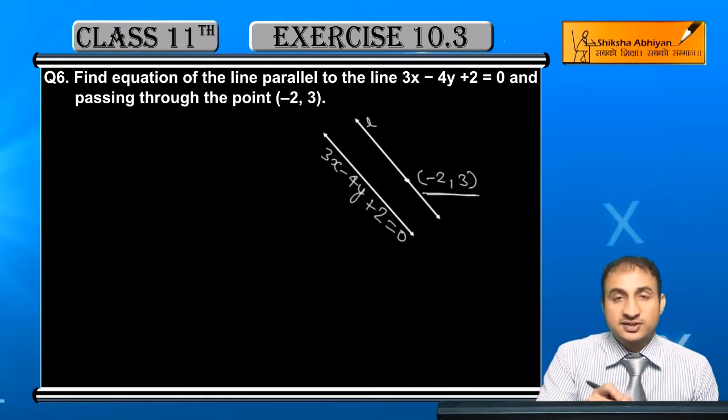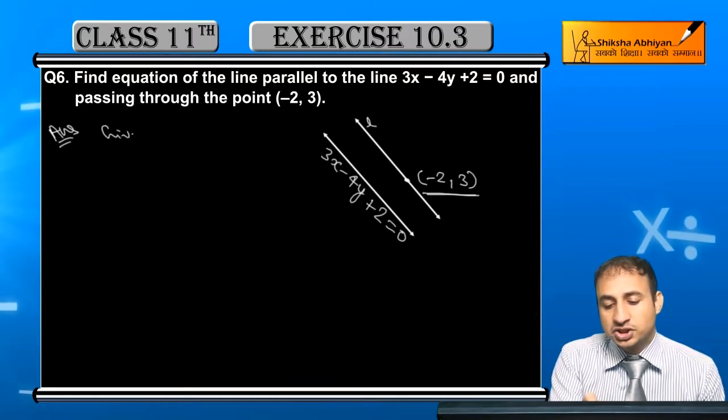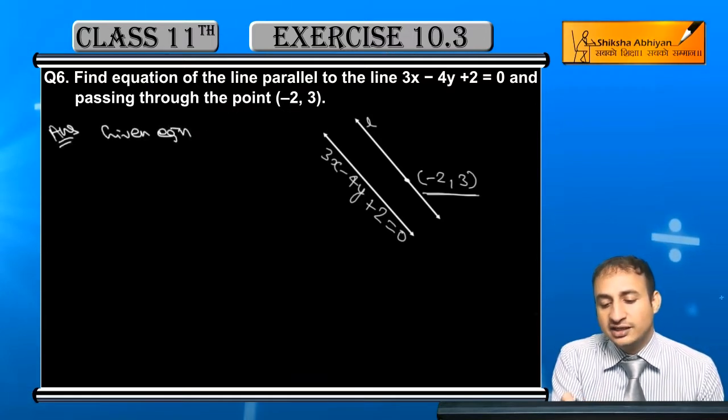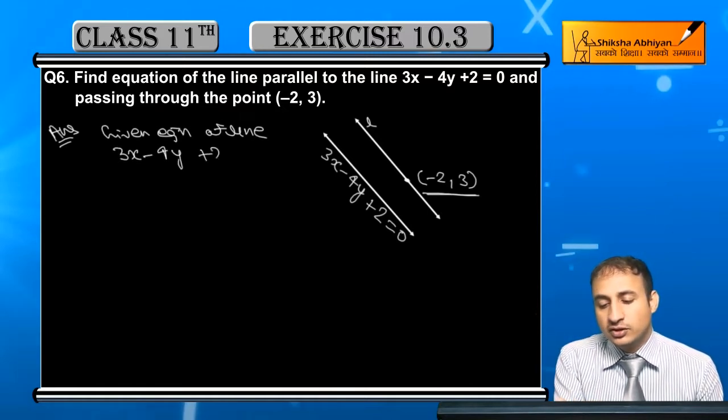First I will write the line which is given. The equation of the line is 3x minus 4y plus 2 equals 0.